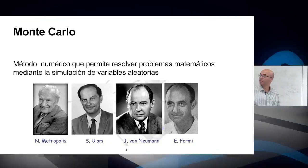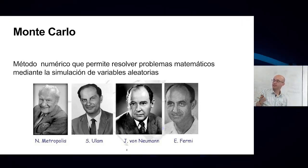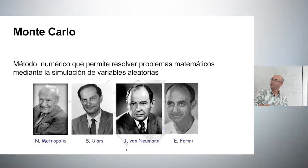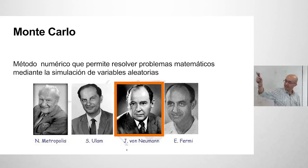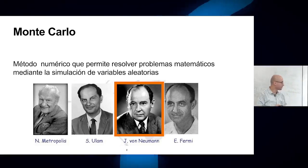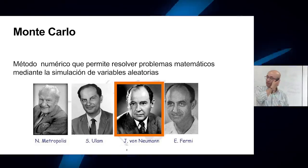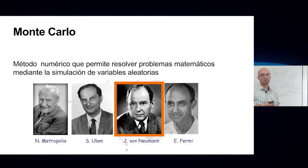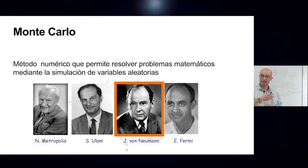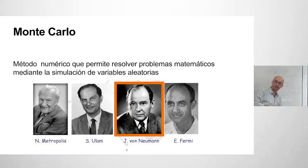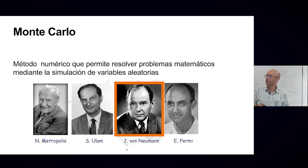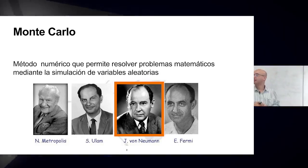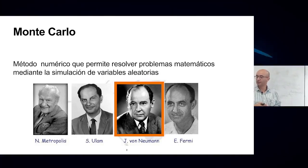It is worth mentioning von Neumann — one of the most complete mathematicians of the 20th century — who actually visited Colombia. In 1954, at the Universidad de Los Andes, brought by Mario Laserna, he spent about three weeks giving courses. He passed away just two years later.